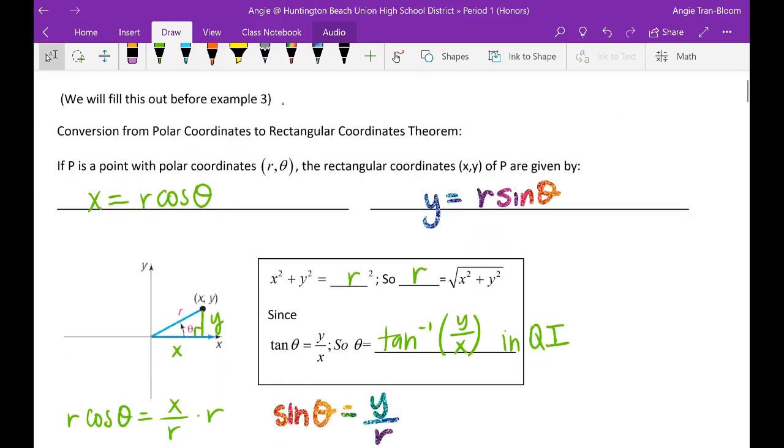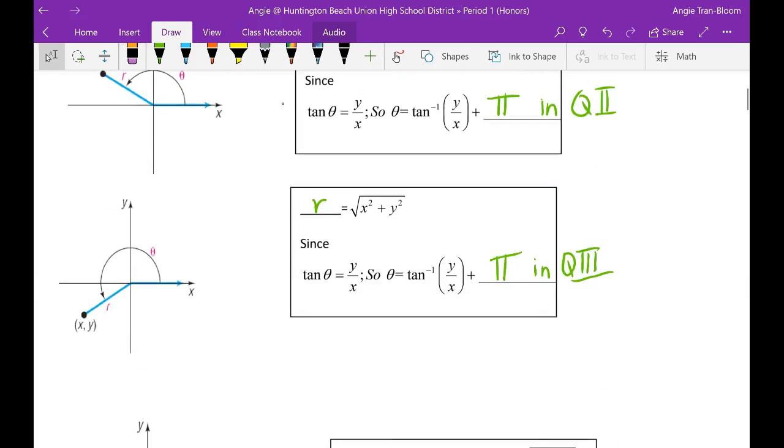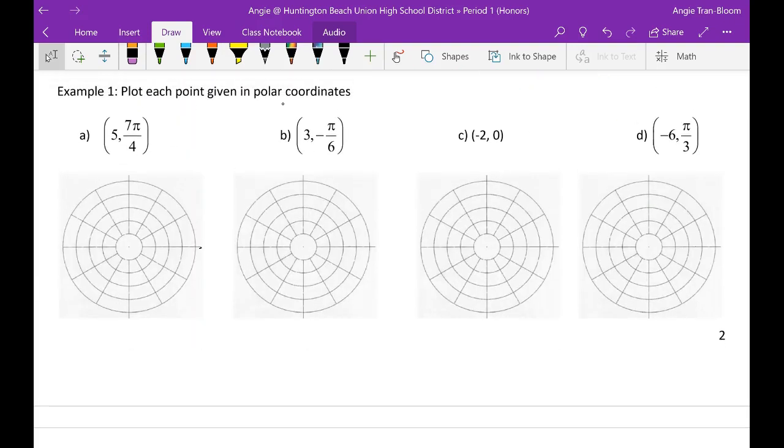So that leads me to example one. Go ahead and go all the way to example one. Don't worry about the other ones, we will do those later. Example one: plot each point given in polar coordinates. So in your homework if you don't have these grids printed, then